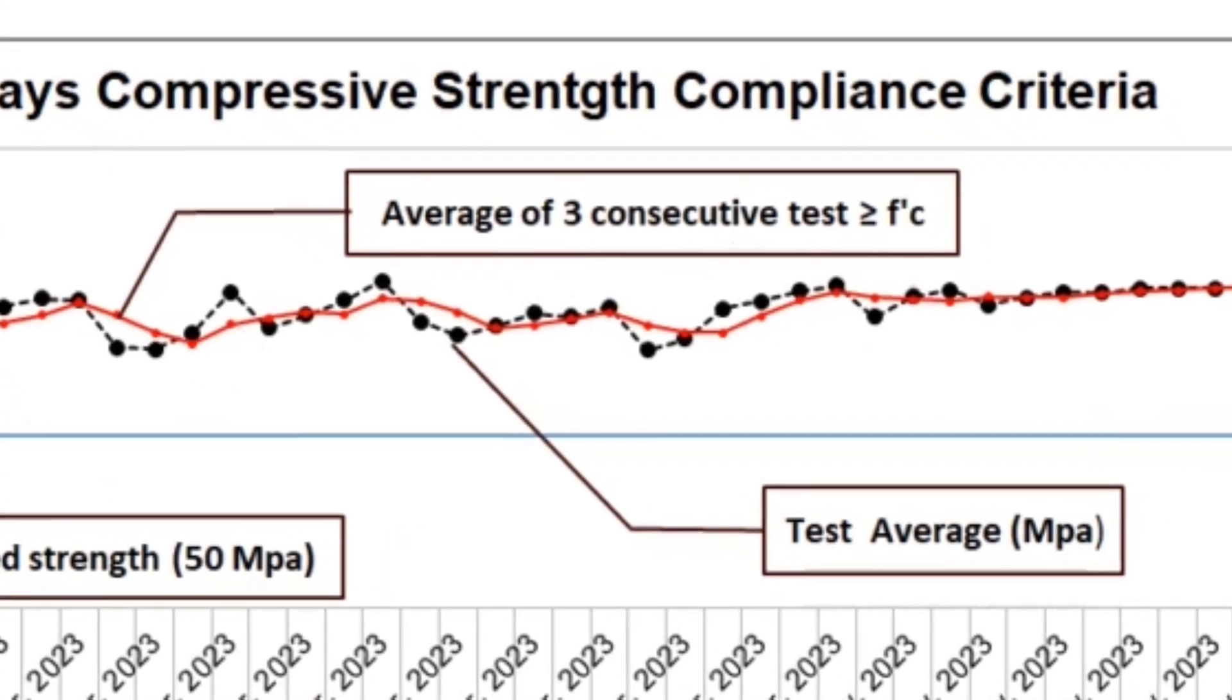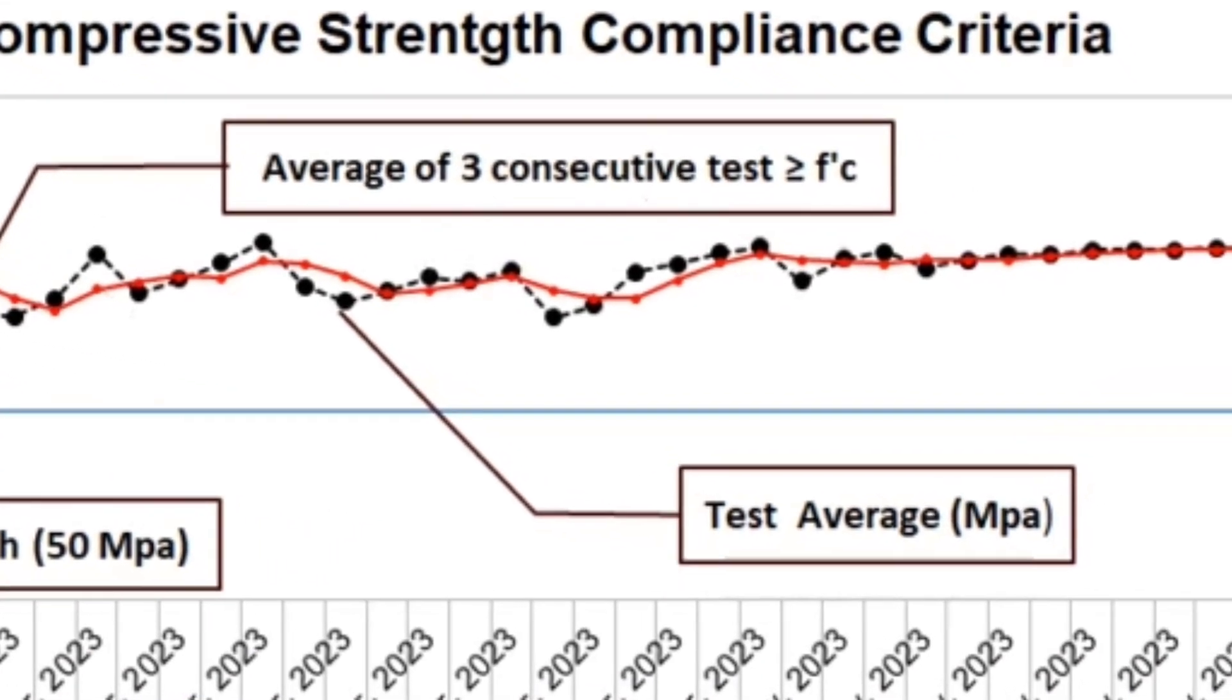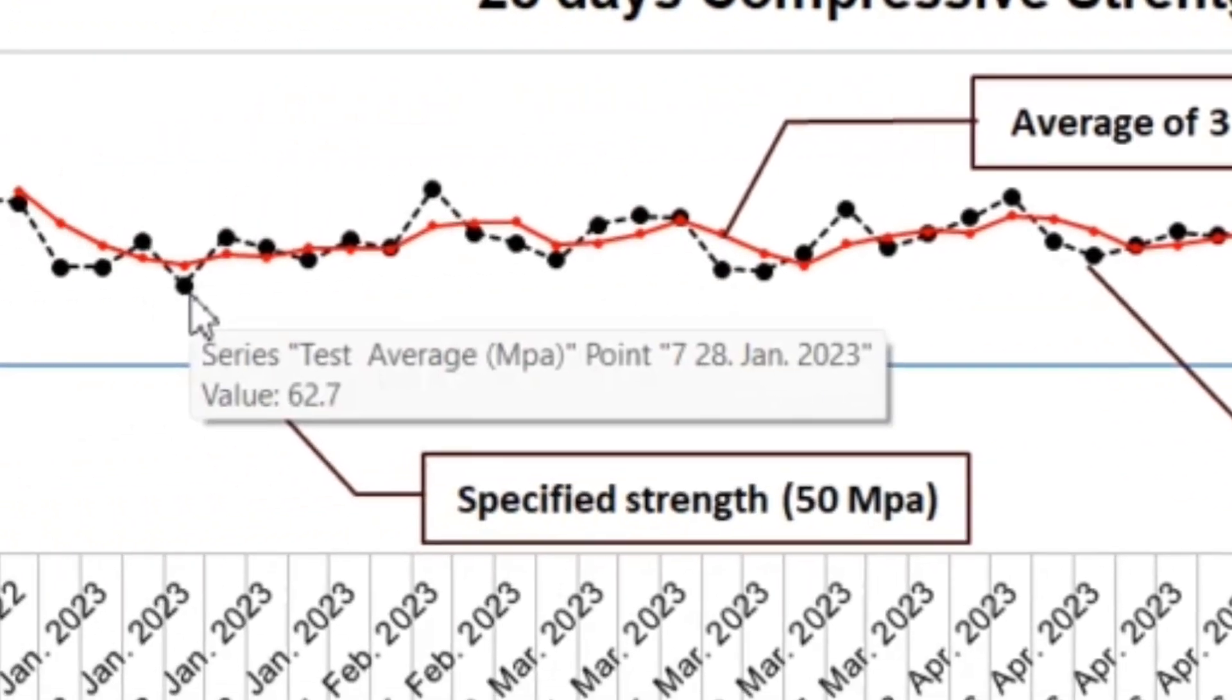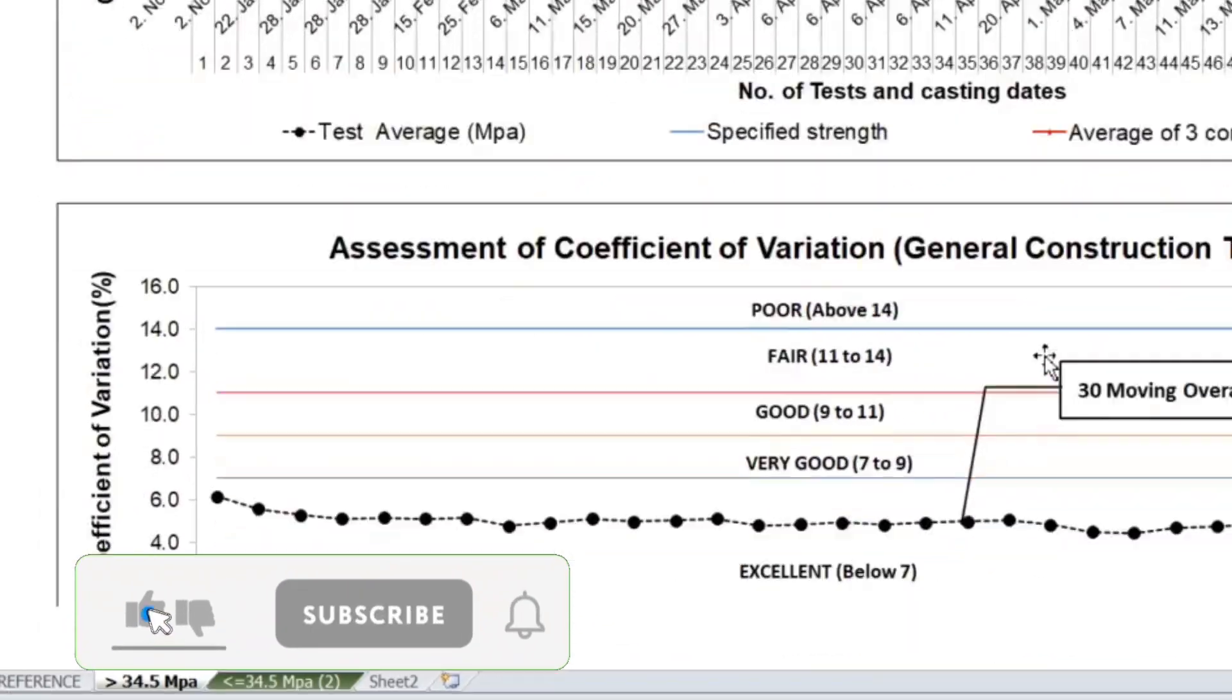This red line represents the 3 consecutive strength tests, while the black line is the running strength test, both above the specified 50 MPa at 28 days.